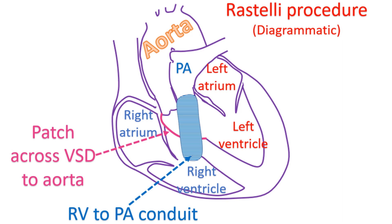The ventricular septal defect is widened and the infundibular septum resected, followed by baffling of the left ventricle to the aorta.